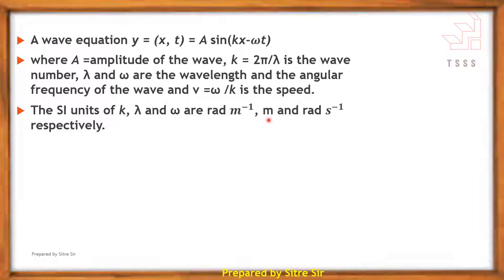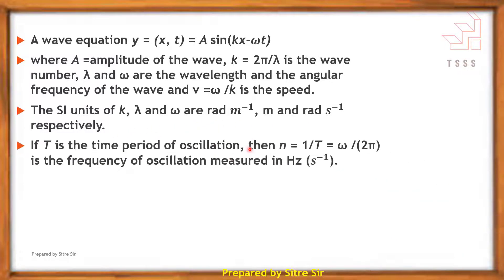Here, λ is measured in meters and ω is in radians per second. If T is the time period of oscillation, then the frequency n = 1/T. Putting in values, the frequency ω/2π is the frequency of oscillation measured in Hertz or per second.